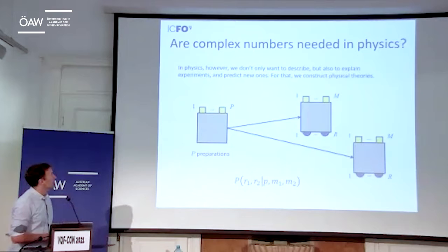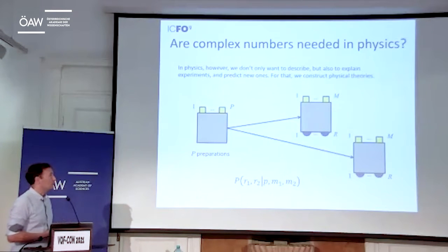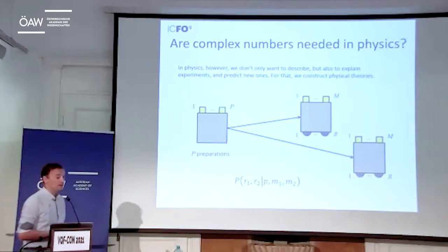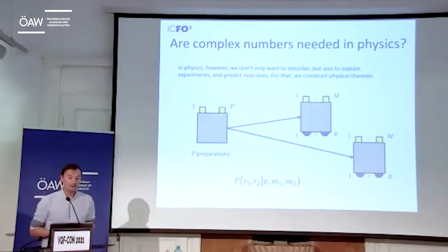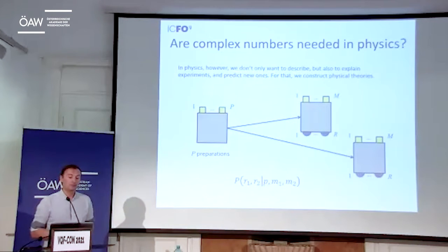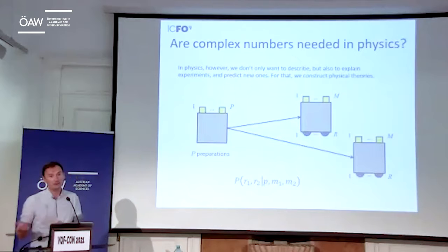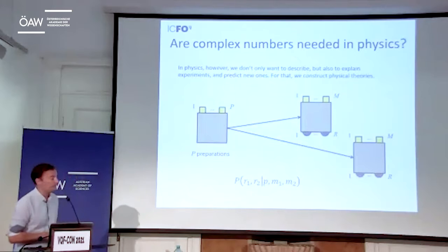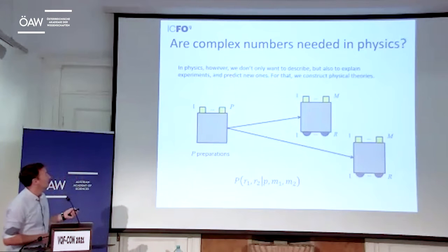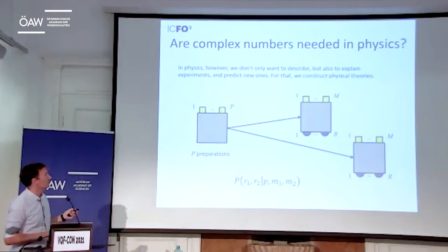If you think about physics, we want to reproduce experiments, but we also want to explain them. For that, we make theories. We use theories to explain experiments and also to predict new experiments. This gets closer to the goal of my talk: if you specify a given theory, the question may become more interesting.